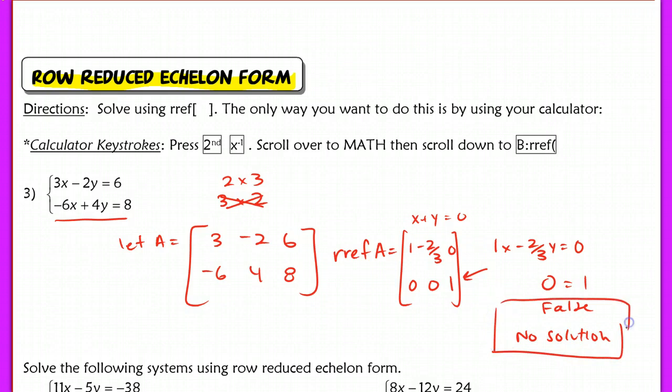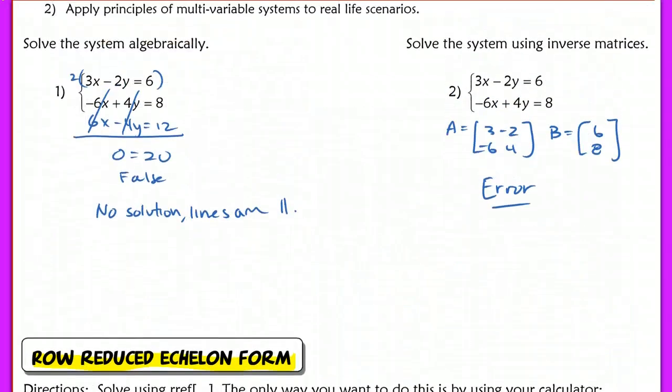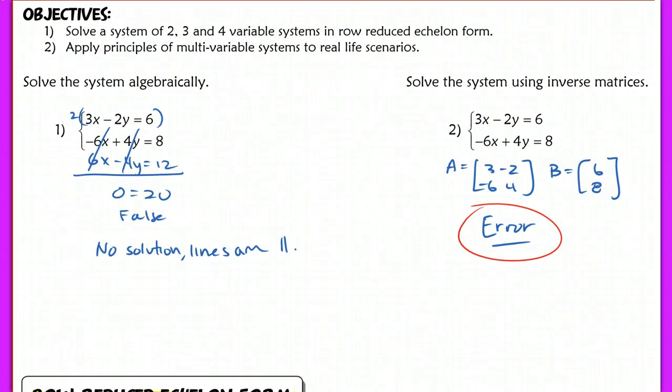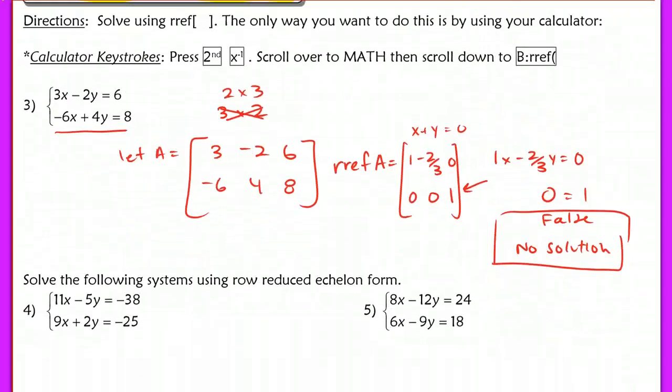Row reduced echelon form allows us to actually figure out what the solution to this system is, whereas before with inverse matrices, we just get that error message. That's why we no longer want to use just inverse matrices. I think you're going to like row reduced echelon form because you only have to fill out one matrix.